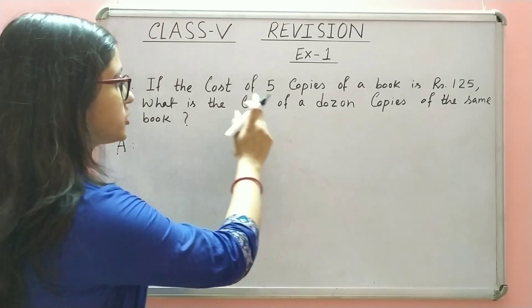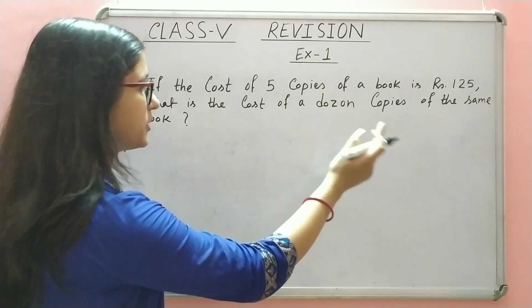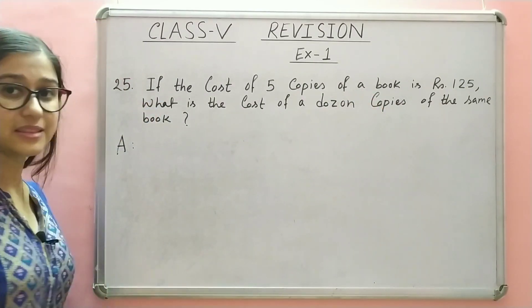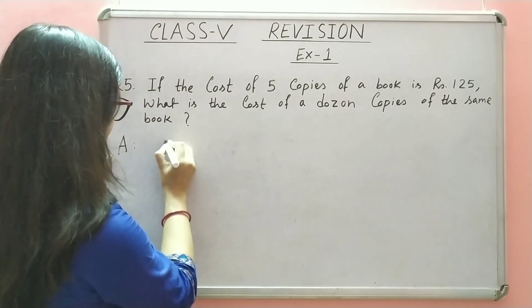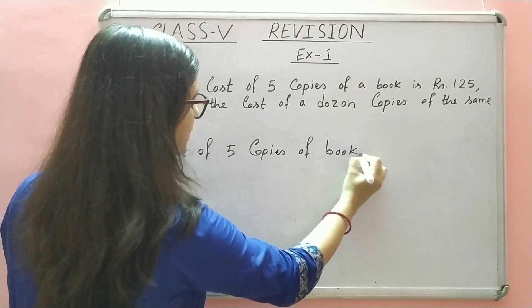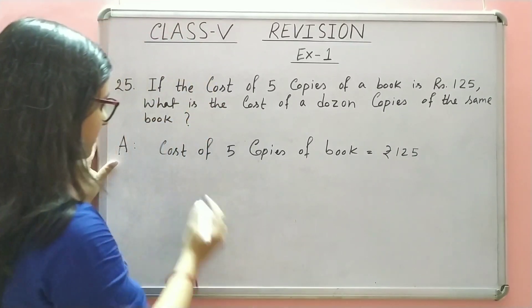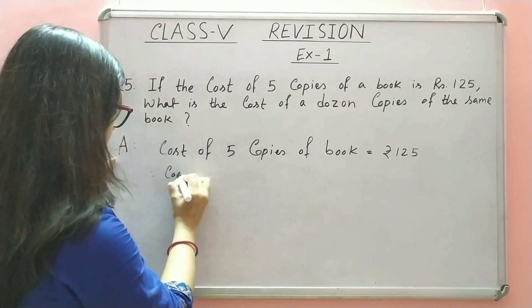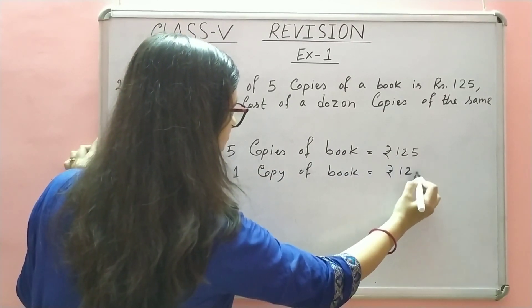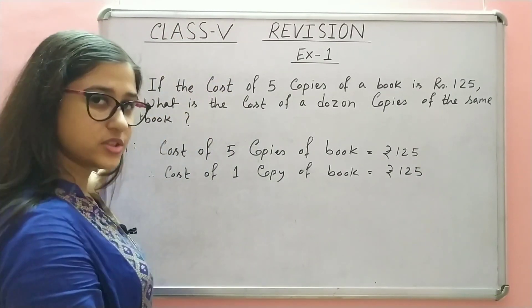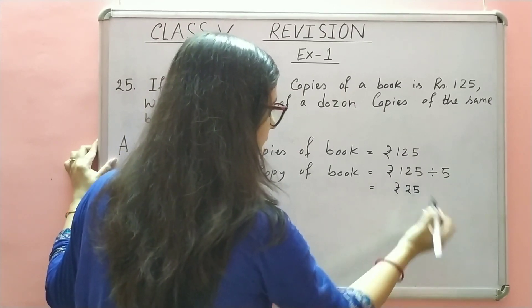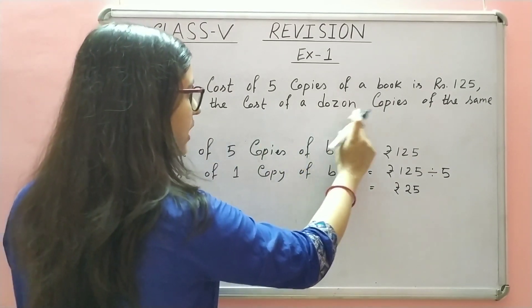Question number 25: If the cost of 5 copies of a book is Rs. 125, what is the cost of a dozen copies of the same book? Agar 5 copies book ki cost 125 rupees hai, toh 1 dozen copies book ki cost kitna aayega, wo hume nikalna hai. Cost of 5 copies of book is equal to Rs. 125. Abhi hum nikalenge 1 copy of book ka cost. Cost of 1 copy of book is equal to Rs. 125 divided by 5, so Rs. 25.